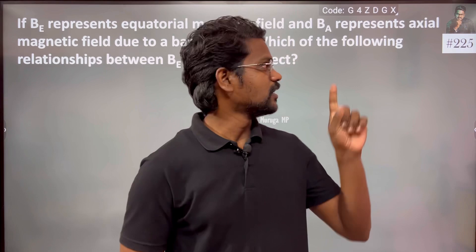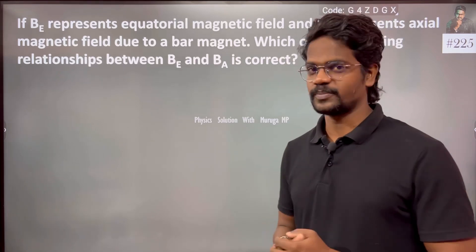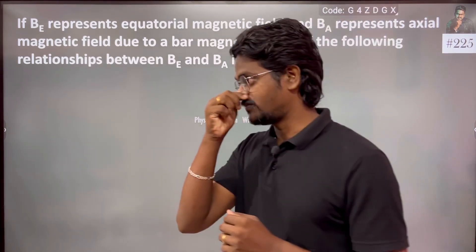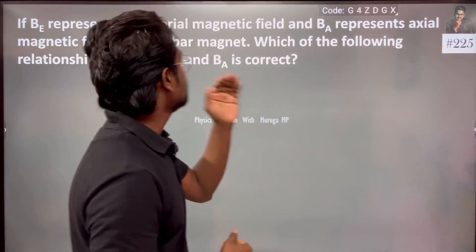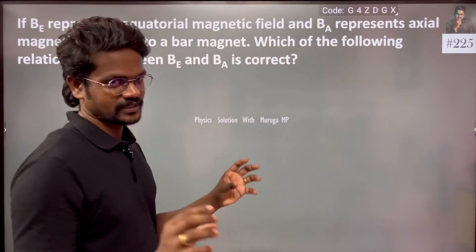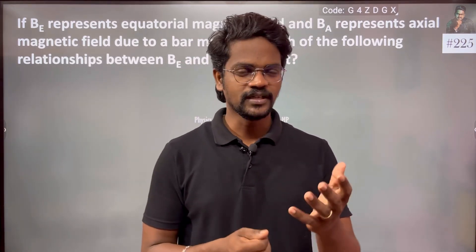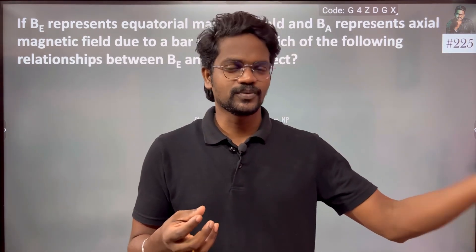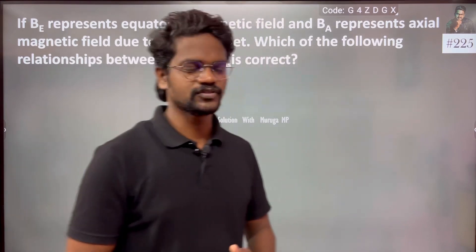Hi everyone, I have an interesting question from Chapter 5. If BE represents the equatorial magnetic field and BA represents the axial magnetic field due to a bar magnet — this is similar to Chapter 1, Electric Charges and Fields, where we discussed the electric dipole axial point and equatorial position electric fields. Here we are going to talk about the same concept for magnetic fields.